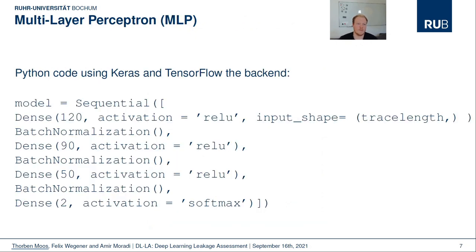This is the Python code that defines the multilayer perceptron in Keras which we have used throughout this work. It is an extremely simple network with four fully connected layers and two output neurons for the classification. We have kept it very simple on purpose to make it suitable for a wide range of side-channel traces and different forms of side-channel leakage.